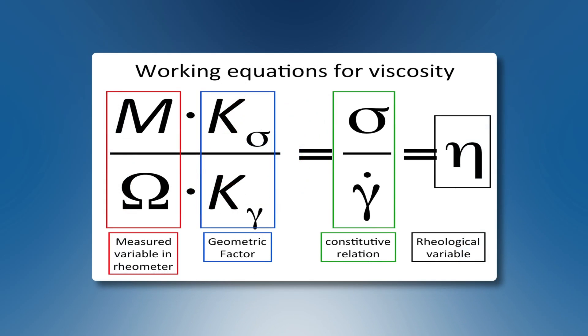A rheometer measures the stress by means of a torque and the strain by means of a deviation, a displacement or a displacement rate. So we can measure torque and displacement velocity.